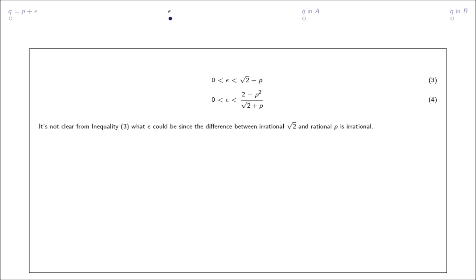It's not clear from inequality 3 what epsilon could be since the difference between irrational square root 2 and rational p is irrational. We can use the equality here to get the right term in inequality 4. Although the term is still irrational due to the irrational denominator, it's now easier to pick a rational epsilon.